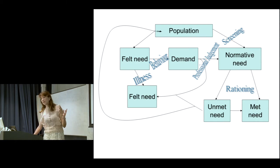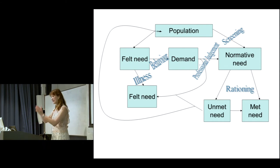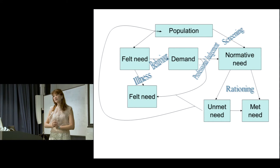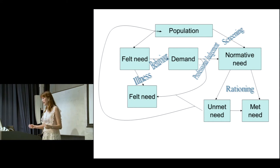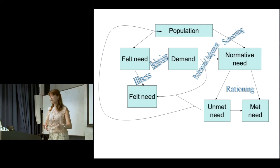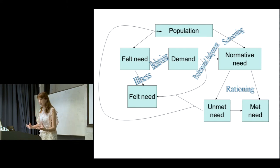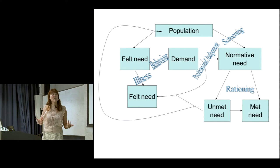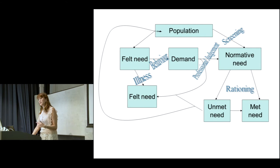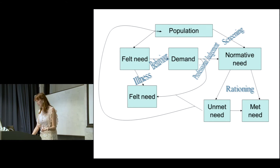It's also possible that you are in a healthy population with no felt need. This is where screening comes in — you didn't know you had a need, but through screening you detect something like early cervical cancer and suddenly have a disease. You move straight to normative need without having first experienced a felt need. This completes the model for understanding how need, demand, and use come together.